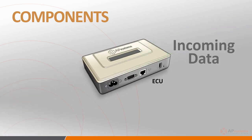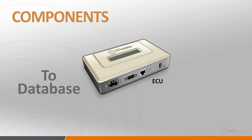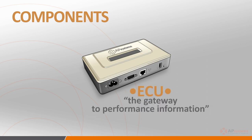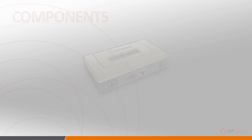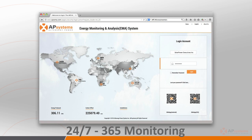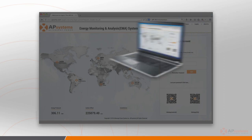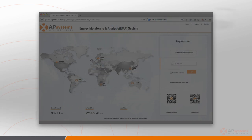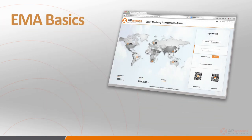The ECU collects and stores the performance data from each of the microinverters and sends it to the AP Systems database so that the array can be monitored via the Internet. The ECU, while optional, is an essential component of the remote monitoring system that should be thought of as the gateway to the performance information that can be retrieved from each inverter and its assigned PV modules. The Energy Monitoring and Analysis or EMA website allows for 24-7 management and monitoring of the solar array via any web-enabled device, such as an Internet-connected computer, tablet, or smartphone. While the EMA functionality is covered in-depth in another training session, a few basics are in order.